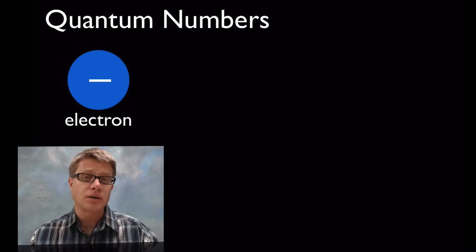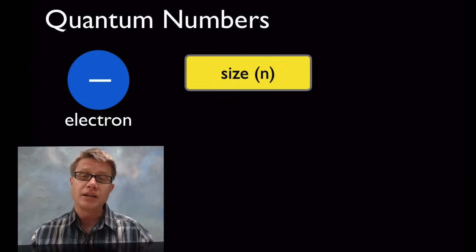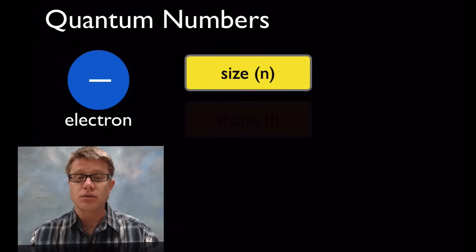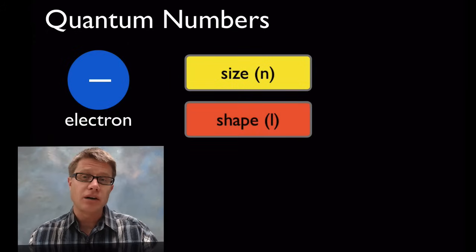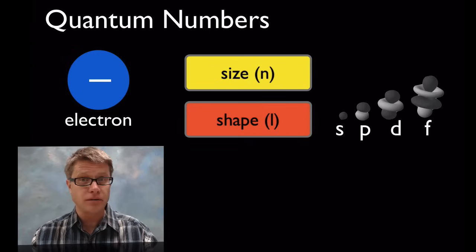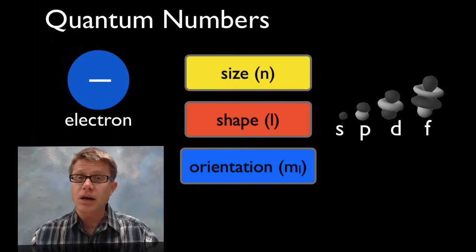And so we have what are called quantum numbers. And the first three are going to determine what that orbital looks like. So the first one is going to be n, and that's going to be the size of the orbital. As n gets larger, then that area of which those electrons are going to be is going to get larger. We next have L, which is going to be the shape of that orbital. It could be an S, a P, a D, or an F.